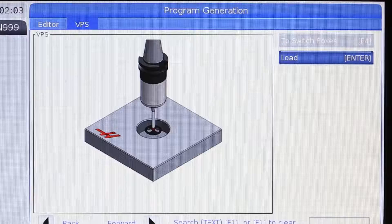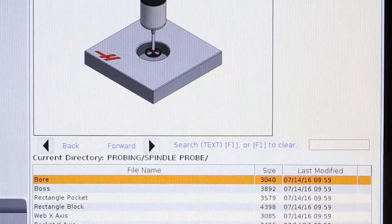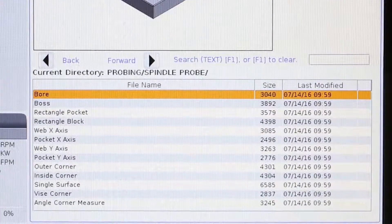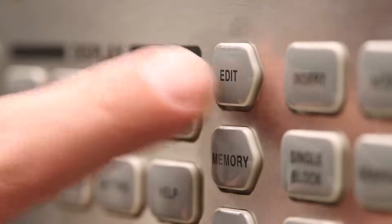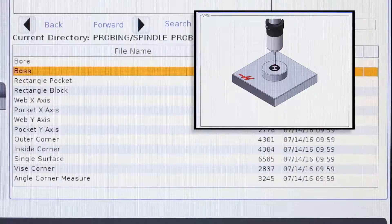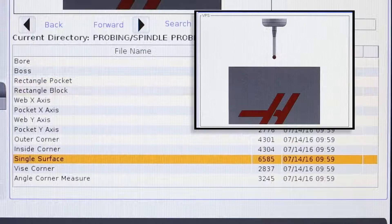This is the probing page under VPS, Visual Programming System, on a next-gen control. The machines are leaving the factory today. To get to the VPS page, we're gonna press the Edit key. On this page, we have a long list of probing cycles we can use.